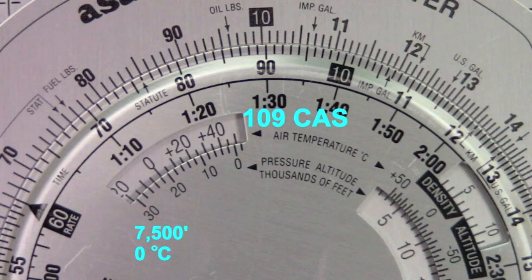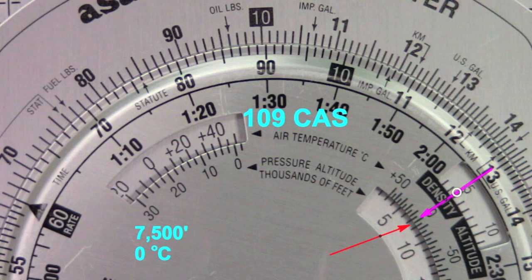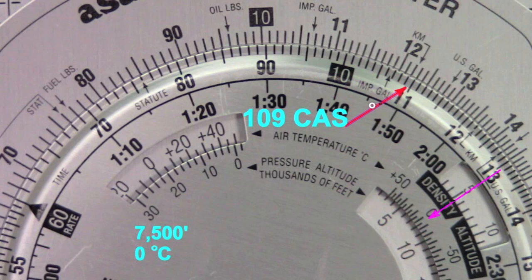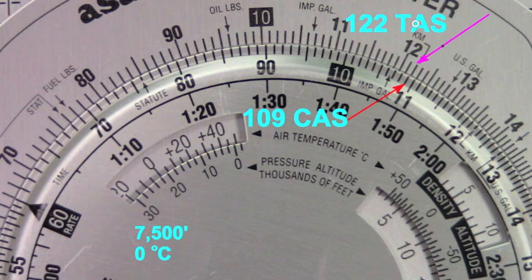Now it's time for the E6B. We've got it already dialed in: 7,500 feet and 0 degrees centigrade — standard conditions, so the density altitude is essentially the same as 7,500 feet. All we have to do is point to our calibrated airspeed of 109. That's between 100 and 110 — right at 109. On the other side, that's pointing to about 120, 121, 122. So I'm going with 122 knots for my true airspeed.